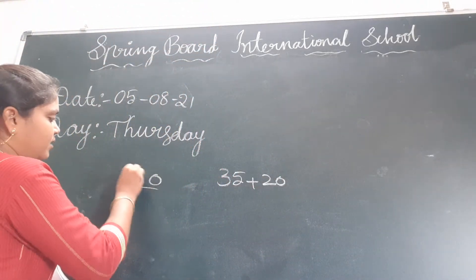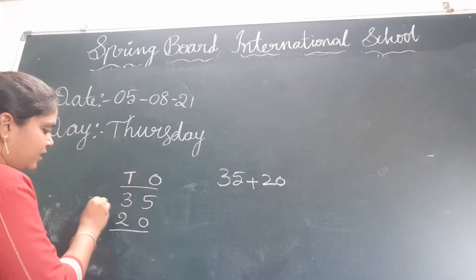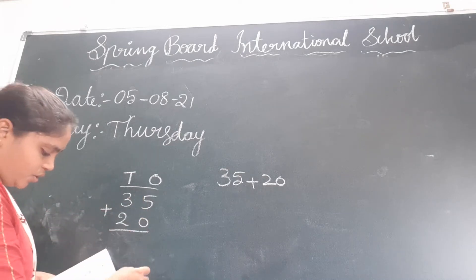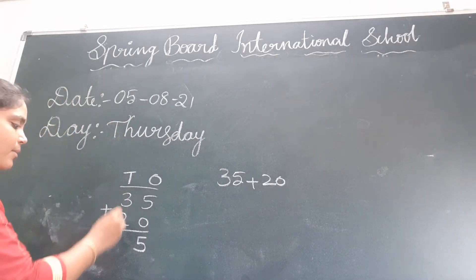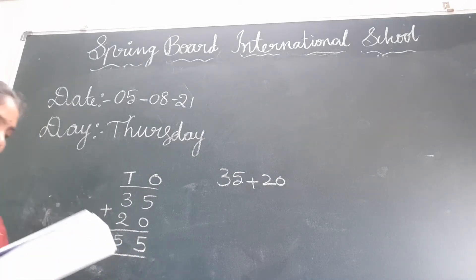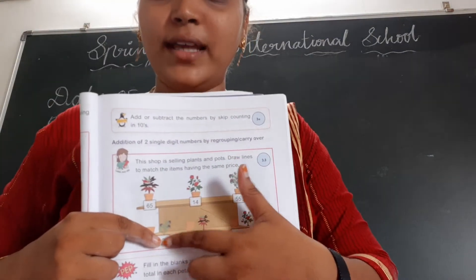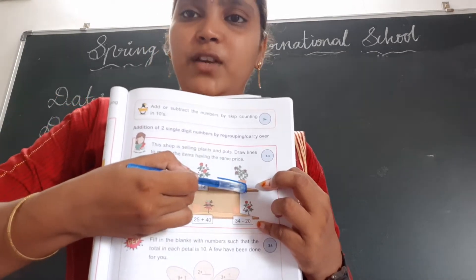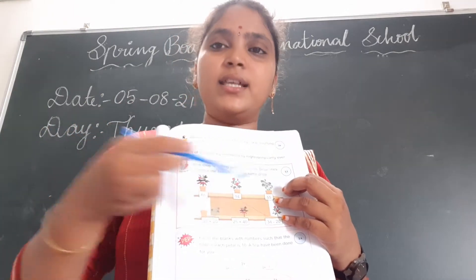I will add these numbers: 35 and 20. Everyone add along with me. 5 plus 0 is 5 — if we add 0 to any number, the result is the same number. 3 plus 2 is 5. So 35 plus 20 is 55. You have to match this number with 55. Everyone match 35 plus 20 with 55.